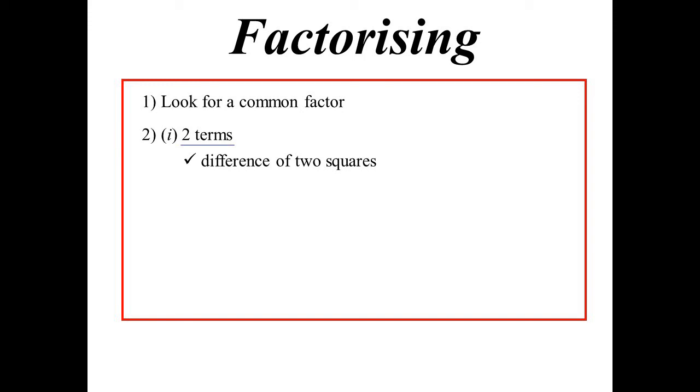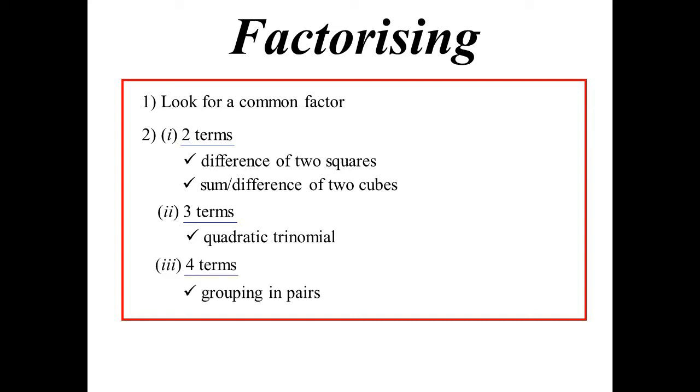So, two terms, not a heck of a lot. You've tried for common factor. Oh, maybe it's the difference of two squares. Could be some difference of two cubes, we'll talk more about that later. Three terms, is it one of those quadratic trinomials? What multiplies together to add together, is it something like that? Four terms, can I try grouping in pairs with this? So, these are the sorts of techniques that we might try.